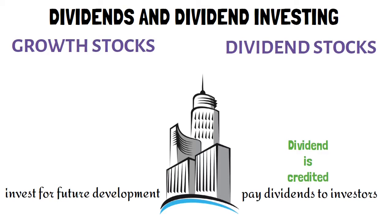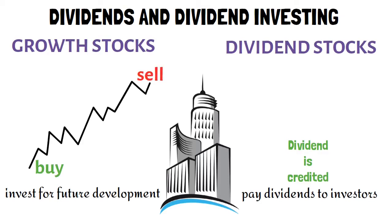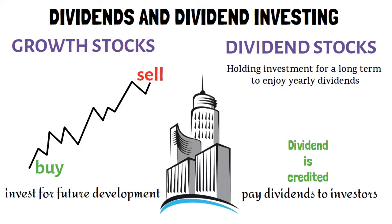Growth stocks work by buying at a low stock price and selling when the price is high. Dividend stocks work differently - you hold them for a long time and enjoy dividends every year. As you hold, the stock price of your company also increases over time.